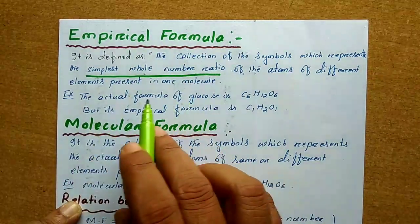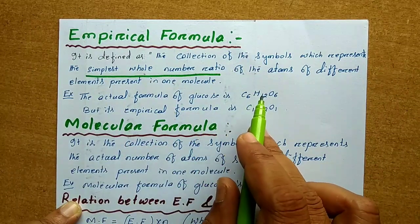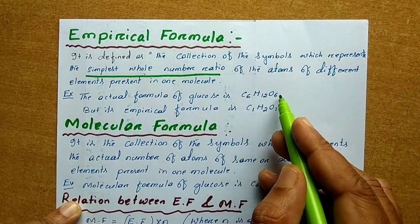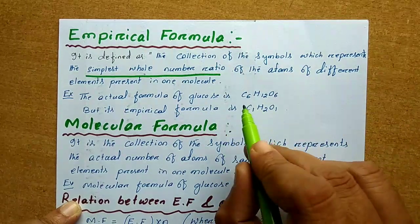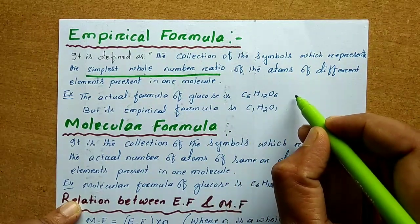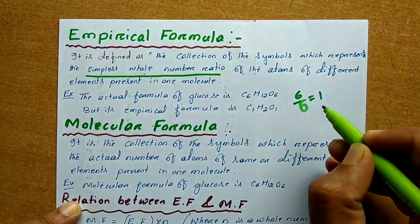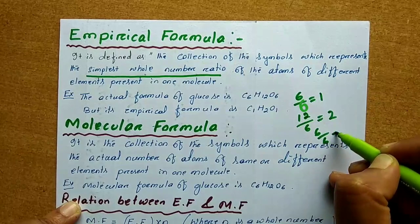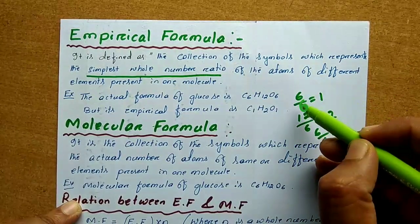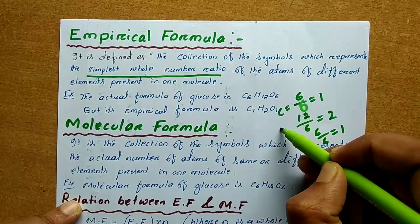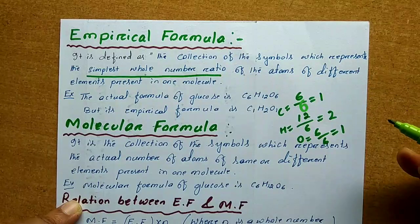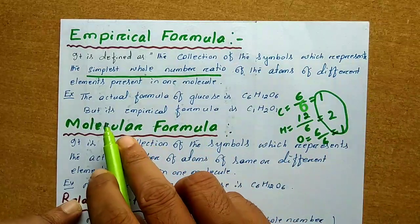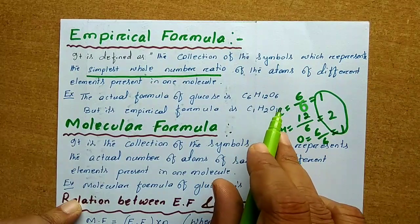We can take an example. Suppose the actual formula of glucose is C6H12O6. If I divide 6 into each element: 6 by 6 equals 1, 12 by 6 equals 2, and 6 by 6 equals 1 — for carbon, hydrogen, and oxygen respectively. That means this is the simplest whole number ratio. So the empirical formula is CH2O.